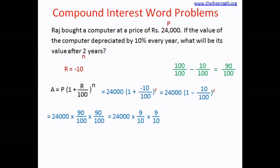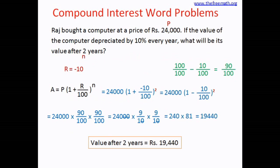So we have 24,000 multiplied by 90 over 100 multiplied by 90 over 100. 90 over 100 can be written as 9 over 10, so it becomes 24,000 multiplied by 9 over 10 multiplied by 9 over 10. Cancelling two zeros from numerator and denominator — which means dividing both by 100 — we get 240 multiplied by 81. Multiplying 81 by 24 and appending a zero gives 19,440. So the value of the computer after 2 years will be 19,440 rupees.